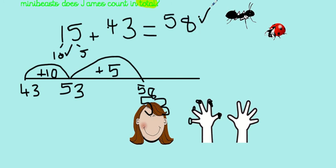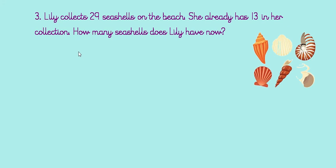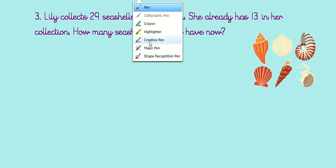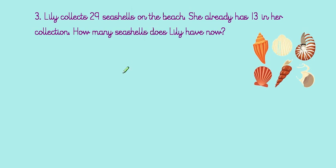Tick or fix. Question three, how did you get on? Let's read it together. Lily collects 29 seashells on the beach. I'd love to go to the beach right now. She already has 13 in her collection. How many seashells does Lily have now? Let's have a look for some vocabulary. How many does she have now? So she used to have 13, then she found 29 more. That one's a bit of a trickier one.